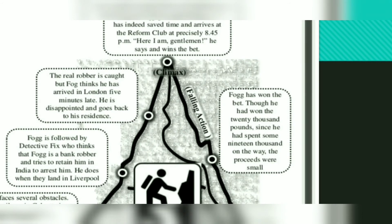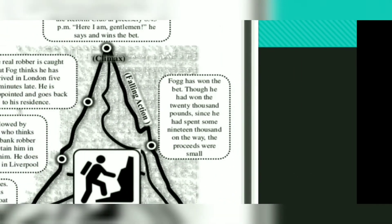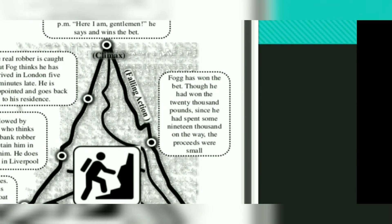Fix does arrest Fogg when they land in Liverpool, their destination. Then the real robber is caught, but Fogg thinks he has arrived in London five minutes late. He is disappointed and goes back to his residence. When making arrangements to marry Aouda, Fogg gets to know that he has indeed saved time and arrives at the Reform Club at precisely quarter to nine, saying 'Here I am, gentlemen,' and wins the bet.